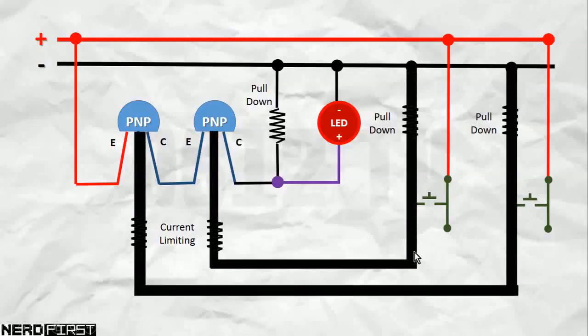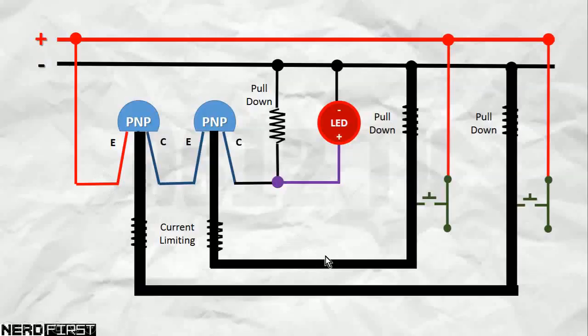Both our switches are open, both our bases go to low, and for PNP transistor, when a base is low, it means the switch is closed, right? There is actually a connection, and yeah, that makes sense, because it allows our high state to flow through and light up our LED.